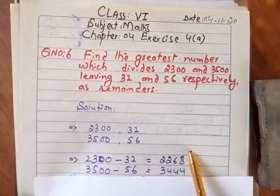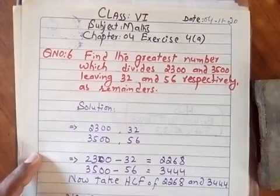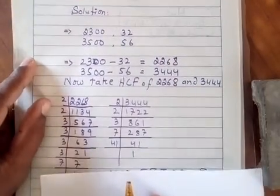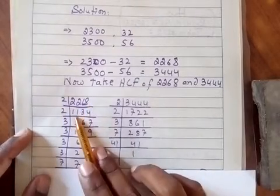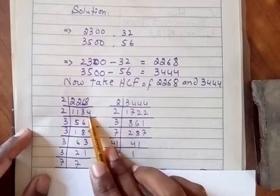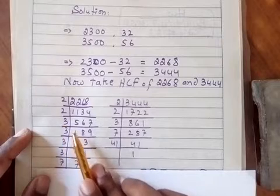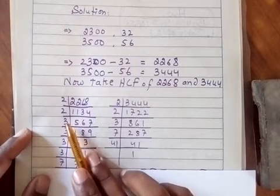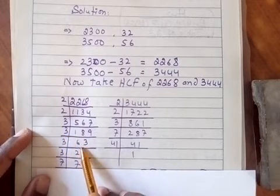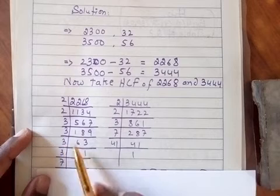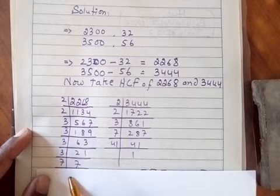Now we will find the HCF of these numbers. For 2268, we divide by 2 to get 1134, then by 2 again to get 567. 567 is divisible by 3, giving 189. Then 189 divided by 3 gives 63, then 63 by 3 gives 21, and 21 by 3 gives 7. 7 is a prime number.